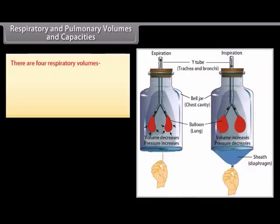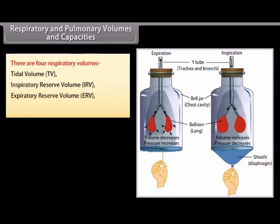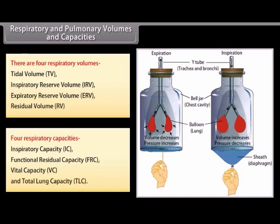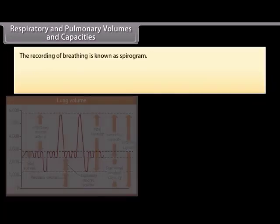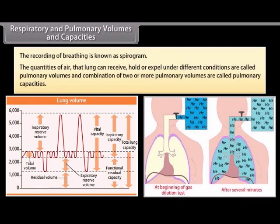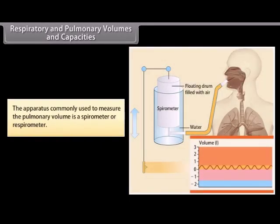There are four respiratory volumes: Tidal Volume (TV), Inspiratory Reserve Volume (IRV), Expiratory Reserve Volume (ERV), and Residual Volume (RV). There are also four respiratory capacities: Inspiratory Capacity (IC), Functional Residual Capacity (FRC), Vital Capacity (VC), and Total Lung Capacity (TLC). The recording of breathing is known as a spirogram. The quantities of air that lungs can receive, hold, and expel under different conditions are called pulmonary volumes; combinations of two or more pulmonary volumes are called pulmonary capacities. The apparatus commonly used to measure pulmonary volume is a spirometer or respirometer.